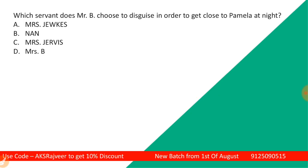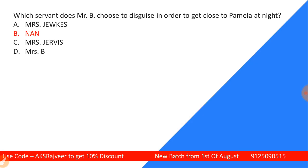Next question: Which servant does Mr. B choose to disguise in order to get close to Pamela at night? Options are Mrs. Jokins, Nan, Mrs. Jarvis, or Mrs. B. The correct answer is Nan — Mr. B disguises himself as Nan the servant to get closer to Pamela at night.